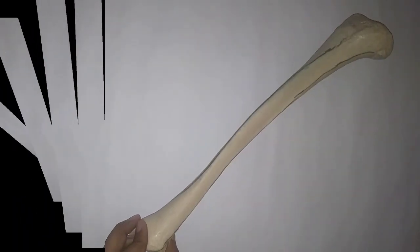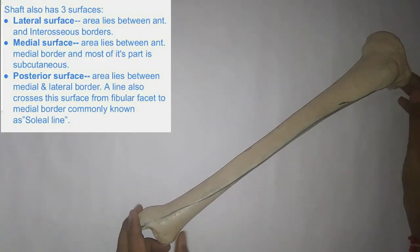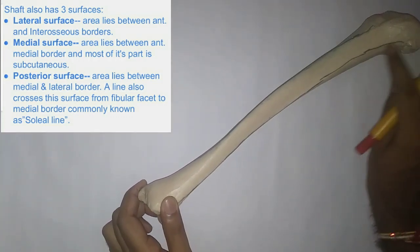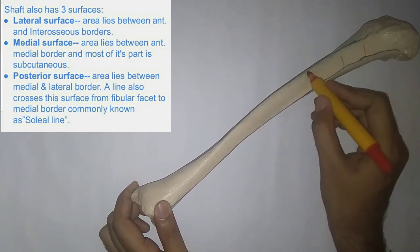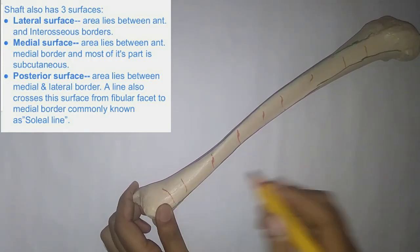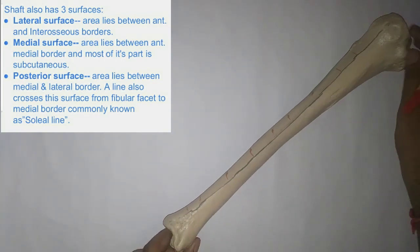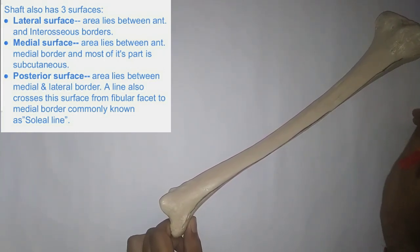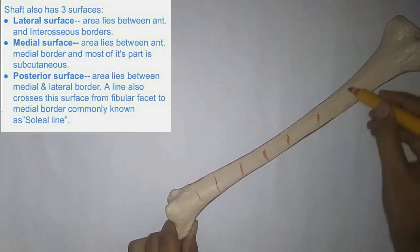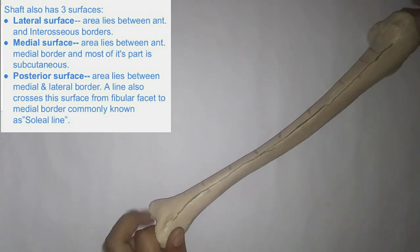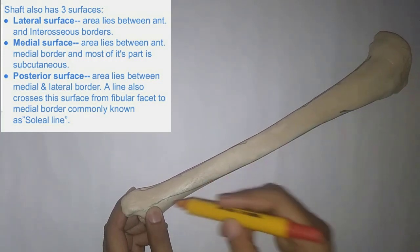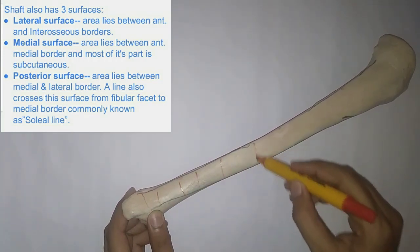Now let's talk about the surfaces. The lateral surface is the area that lies between the anterior border and the medial border. The posterior surface is the area that lies between the lateral border and the medial border. The medial surface is the area that lies between the medial border and the anterior border.